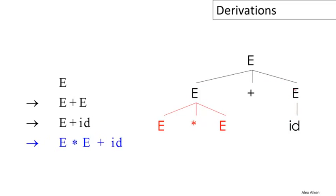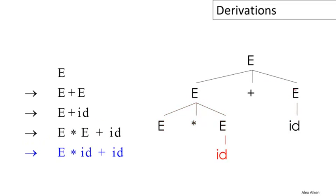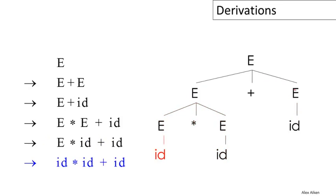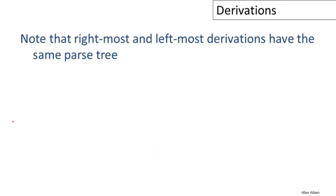Now the rightmost E that remains is replaced by id, and finally the only E that remains is also replaced by id. I want to point out that the rightmost and leftmost derivations I showed you have exactly the same parse tree. This is not an accident—every parse tree has a rightmost and a leftmost derivation. It's just about the order in which the branches are added.